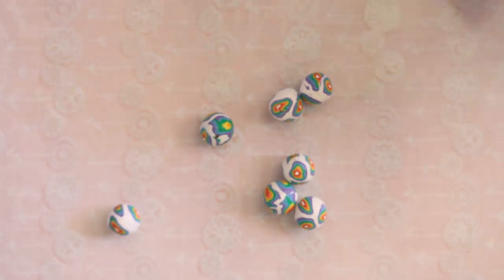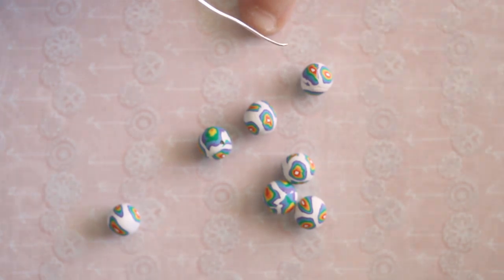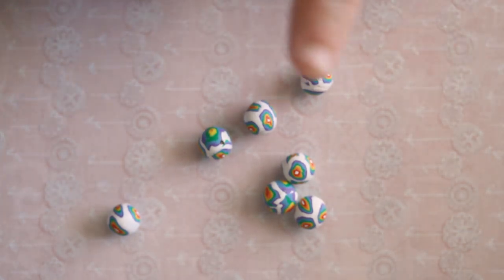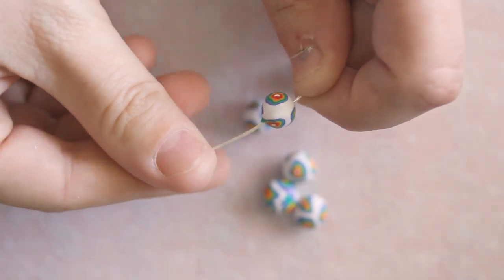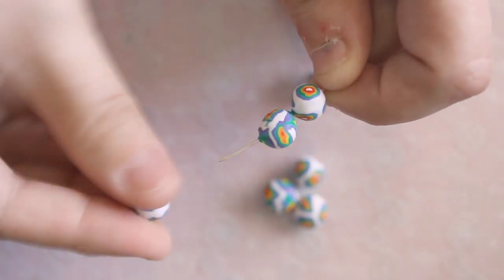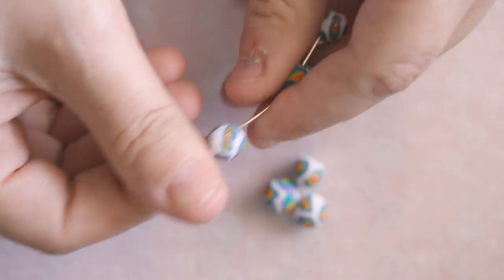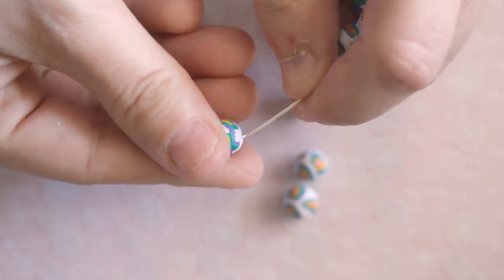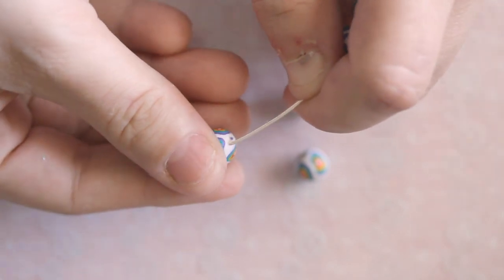Alright, so I went ahead and froze my beads that I just created. What I'm going to do now is put them on the wire. And you want them frozen when you put them on the wire so that you don't deform the shape. Try to do this as quickly as possible because they become unfrozen pretty quickly. Actually, what I would do is do them in batches so you don't lose the shape because they become unfrozen very quickly.